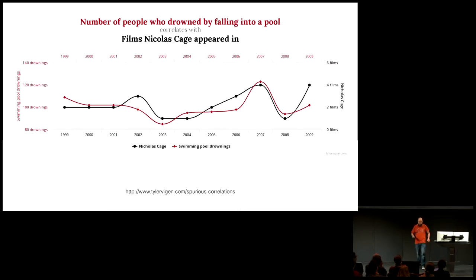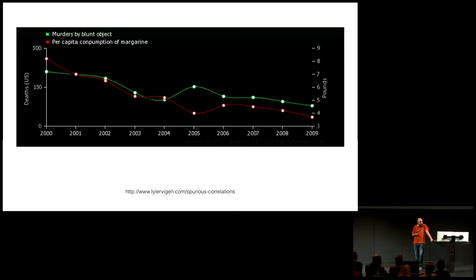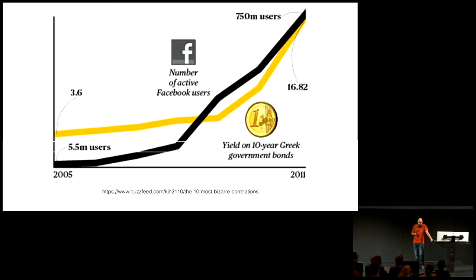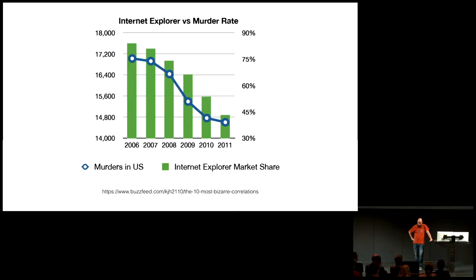Just to give you a few more examples: the number of movies where you see Nicolas Cage as an actor and the number of people dying by falling into a pool — those two variables correlate. So Nicolas Cage is maybe bringing bad luck. Next, the consumption of margarine is also connected to violence or murders by blunt object — margarine makes you kind of aggressive. And if you look at the numbers, more Facebook users means bigger problems for Greece — the national debt of Greece correlates with the number of Facebook users.